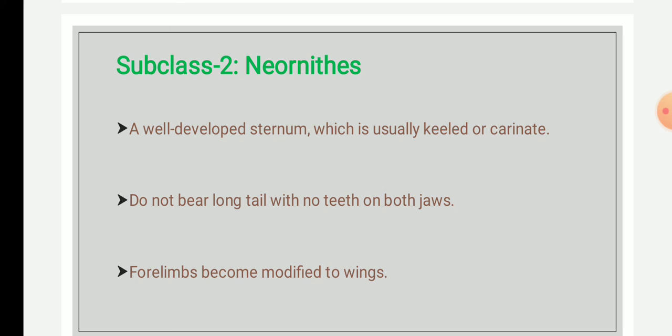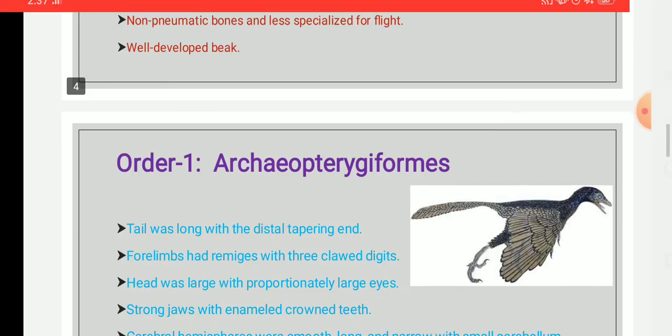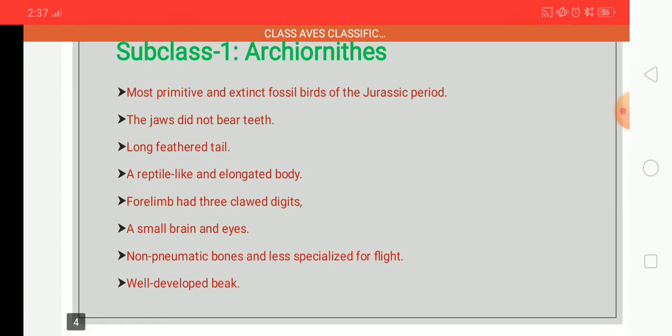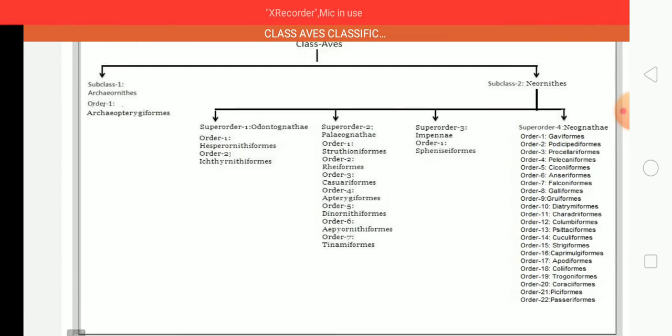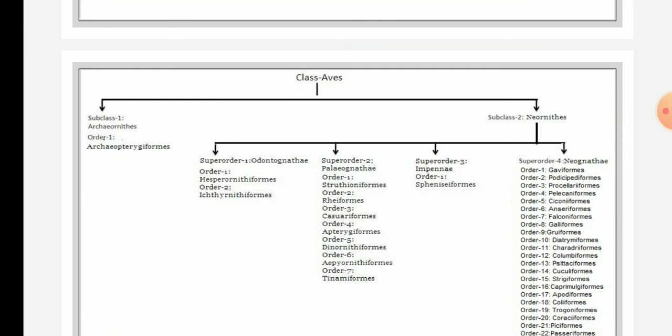Subclass Neornithes is classified into four super orders: super order 1 — Odontognathae, super order 2 — Palaeognathae, super order 3 — Impennae, and super order 4 — Neognathae.